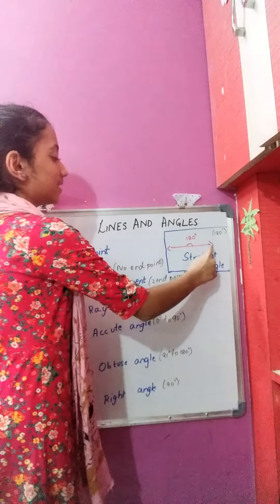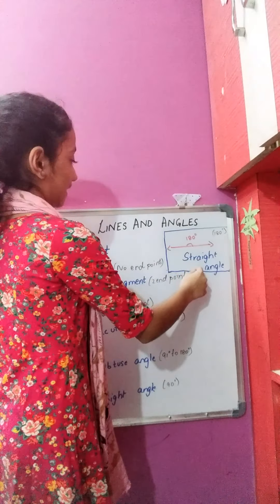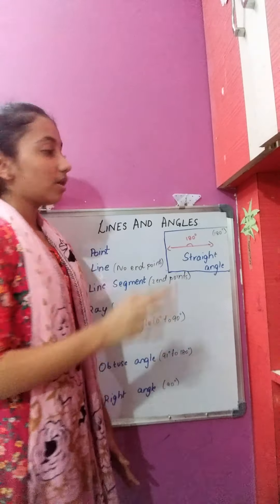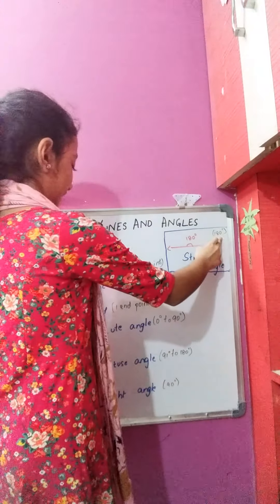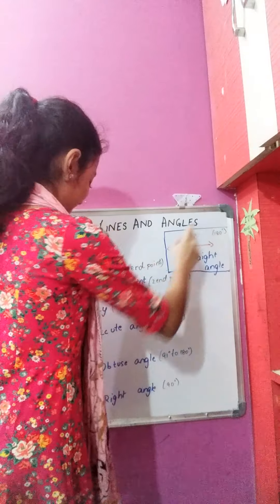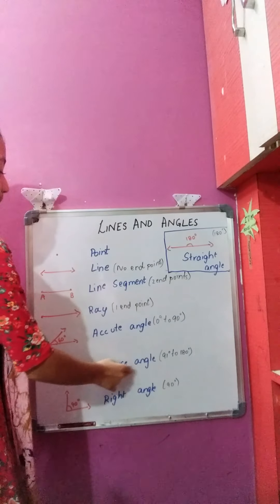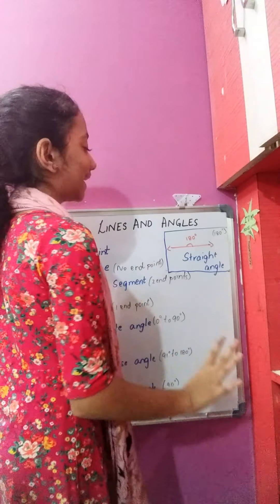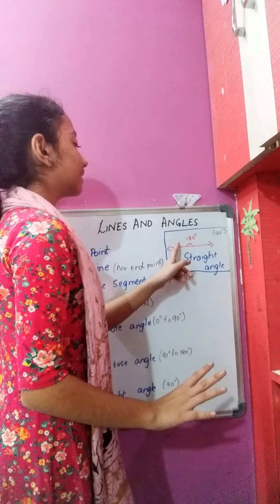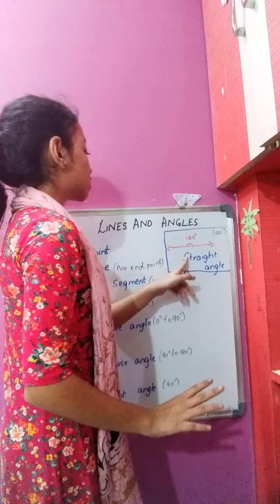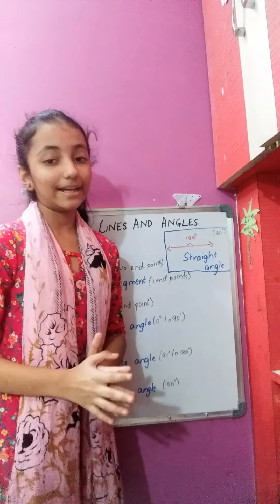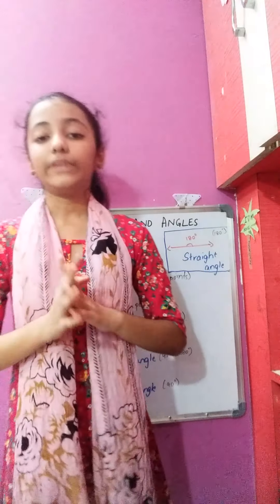This is a straight angle. A straight angle measures 180 degrees. As mentioned, an obtuse angle does not measure 180 degrees, but a straight angle measures exactly 180 degrees.